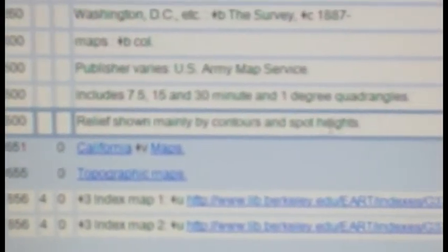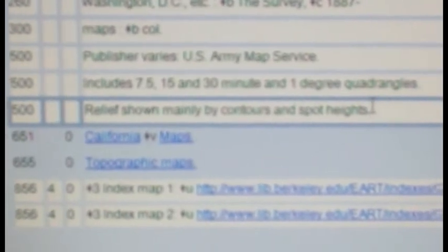You can see the, oh, another important one is how relief is depicted. That's important for maps. In this case it's contours and spot heights, but there's any number of ways of depicting relief. And this 500, the relief is related to this relief field, which is the numeric, I'm sorry, alphabetic code. So this is contours and spot heights RG.